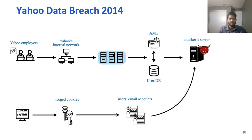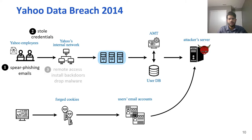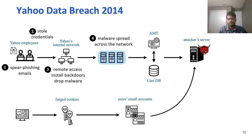The breach started with the attackers sending spear phishing emails to Yahoo employees, harvesting their credentials. They used these stolen credentials to gain access to Yahoo's internal network and installed additional backdoors and malware to maintain persistent access. From this access, they spread across the whole network, infecting a number of different machines. Eventually, they gained access to the user database storing user information such as emails, usernames, email addresses, date of birth, and other information, as well as the account management tool used to query this database.